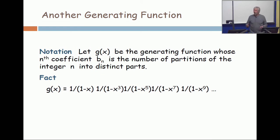The next one, 1 over 1 minus x cubed, is parts of size three. You can have as many threes as you want. The next one is fives, then sevens, then nines, then elevens, etc. Now, to make sure that we're on the same page, I want you to tell me what this is.